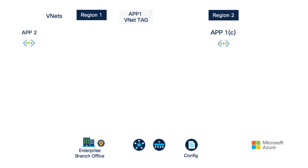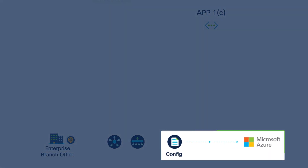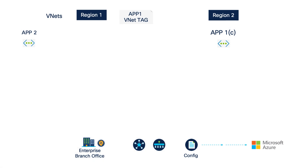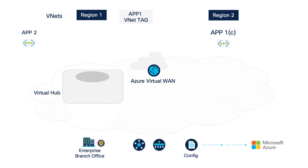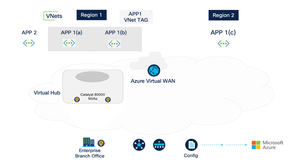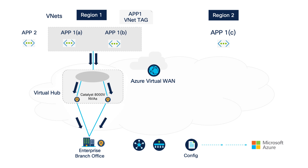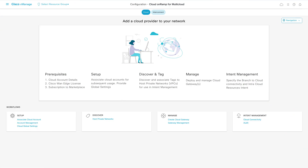Let's take a typical use case in which a customer would like users in the branch to access workloads in Azure. First, we will push the config template to Azure using REST APIs. This will create Azure Virtual WAN, Virtual Hub, and deploy a pair of Catalyst 8000 virtual routers. SD-WAN controller vManage will discover host vNets and group them logically using vNet tags. Next, we will declare intent to access these tagged vNets from the branches. This will automatically bring up connectivity between branch and host vNets.